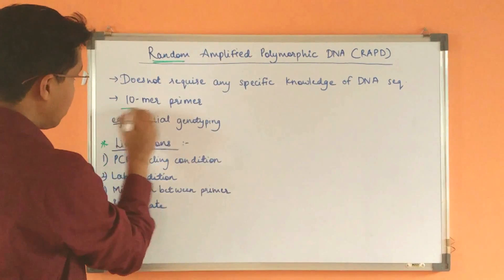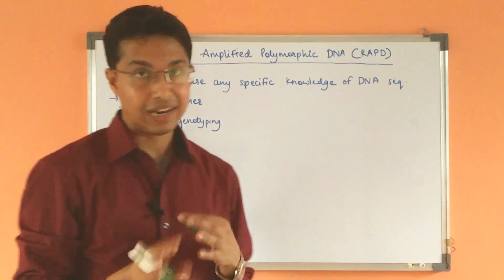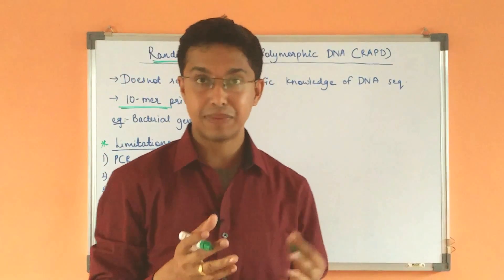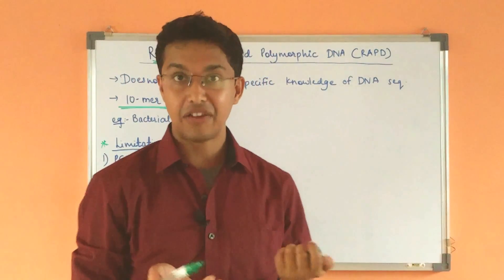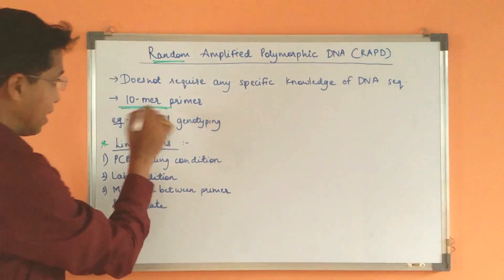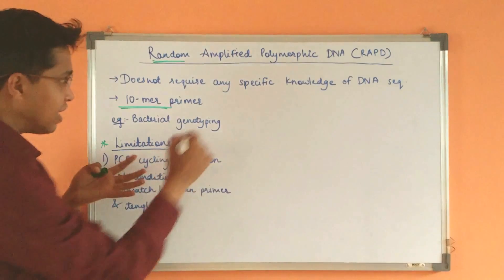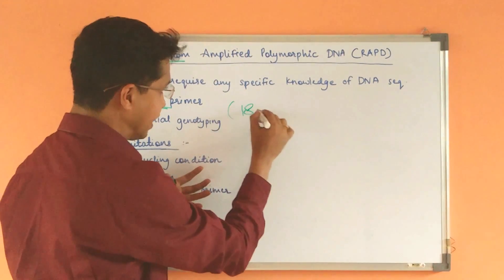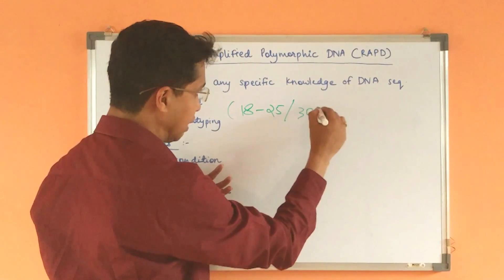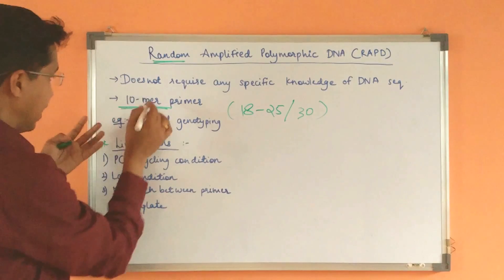The primer used in RAPD does not have a forward and reverse primer. Unlike in PCR, where we need both a forward primer and a reverse primer. The primers in RAPD will be 10-mers — that is the major difference from PCR, where primers are generally 18 to 25 base pairs, up to 30 base pairs. In RAPD, it is only 10.